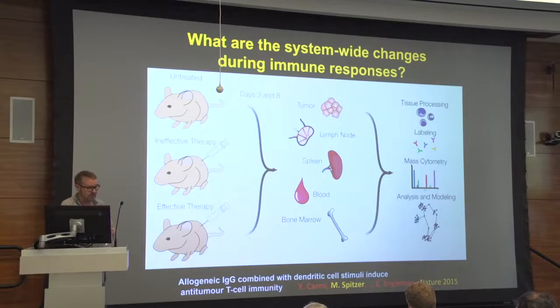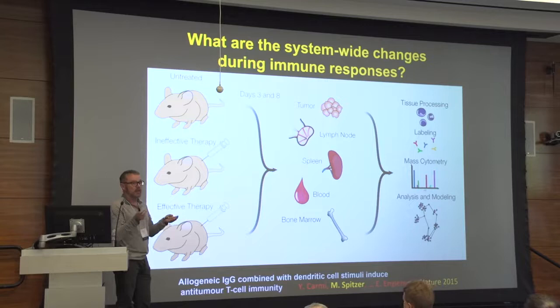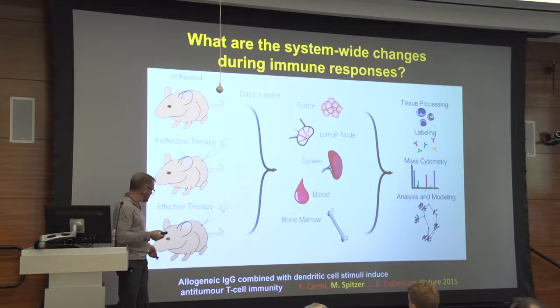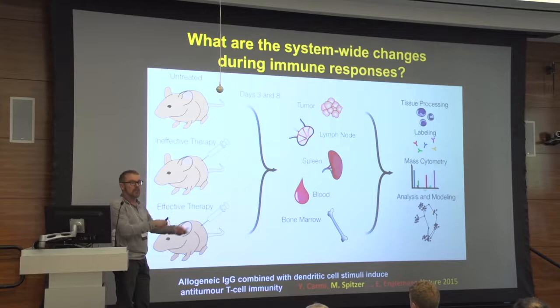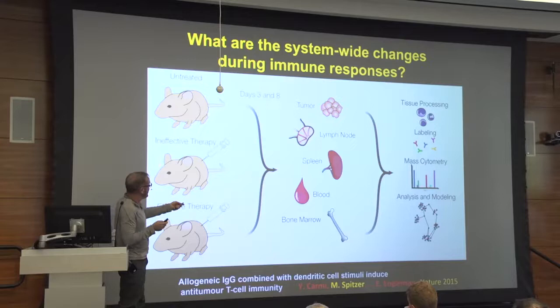Now I'm going to talk about applying this to understand intercellular functions in cancer and the immune system. This riffs off work originally done by Ed Engelman, who showed that allogeneic IgG combined with some dendritic cell stimuli could create a systemic anti-cancer effect — injecting locally into one tumor caused rejection of a distal tumor. Obviously it wasn't done by one cell; it coordinated activities across the whole immune system. So we decided to do a broad-spectrum analysis of every immune cell subset we could get out of the mouse: untreated, ineffective therapy, and effective therapy.